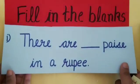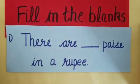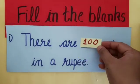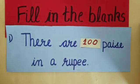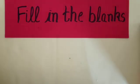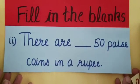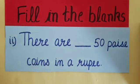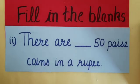Now we will solve some fill-in-the-blanks from page number 90 of your book. Our first fill-up is: there are ___ paise in 1 rupee. As we have done, there are 100 paise in a rupee, so its answer will be 100 paise. Our second fill-up is: there are ___ 50 paise coins in a rupee. We have already done that there are 2 fifty-paise coins in a rupee, so its answer will be 2.